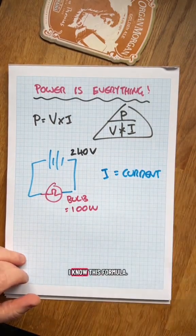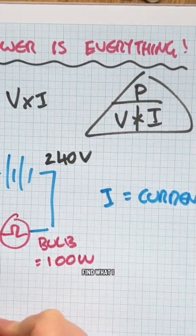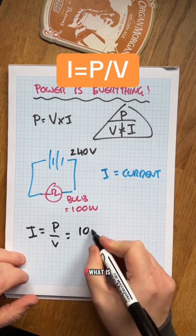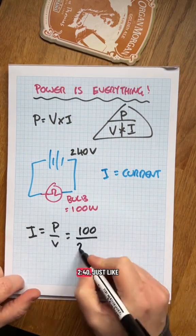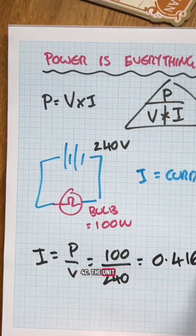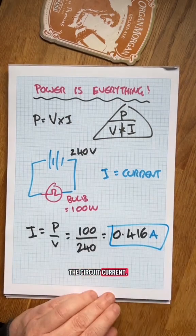Power is V times I. I want to find what I is. I is P divided by V. The power is 100 watts. The voltage is 240. That's about 0.4 amps. That's the circuit current.